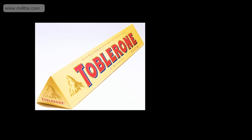A prism is a 3D shape with a constant cross-section. An example could be a Toblerone box — we have a constant cross-section which is a triangle, and then we have its length. So wherever I cut this right the way through, I'm going to have a triangle on the end. A stick of rock is another example — we've got a circle on the end, and we can cut it down anywhere and we will still have that constant cross-section.